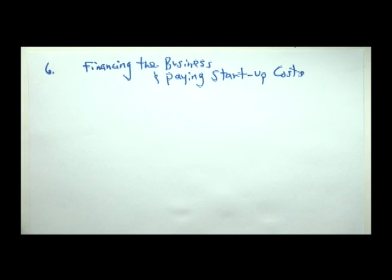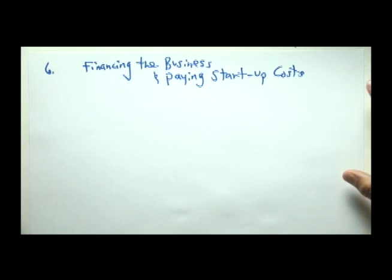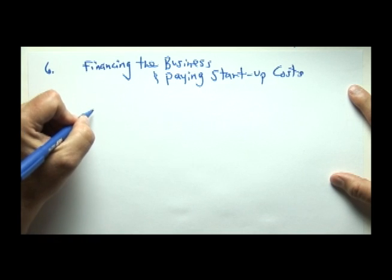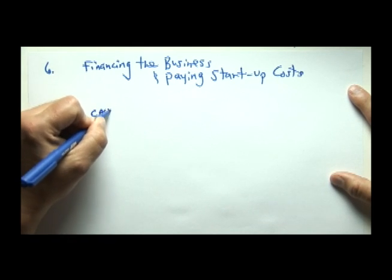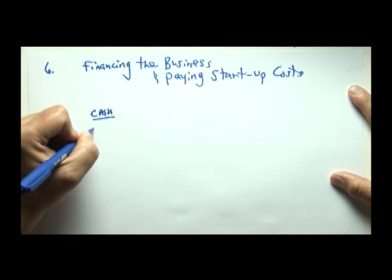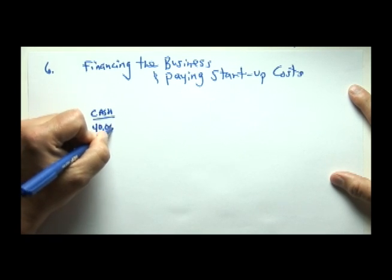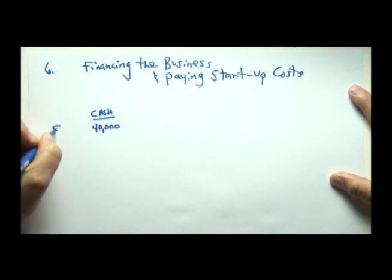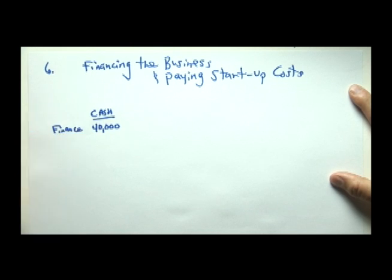In the last video, we learned how a student financed the business by first winning the lottery. The student won $50,000 and then took that $50,000 and opened up a brand new business account, investing $40,000 of personal cash to finance the business.